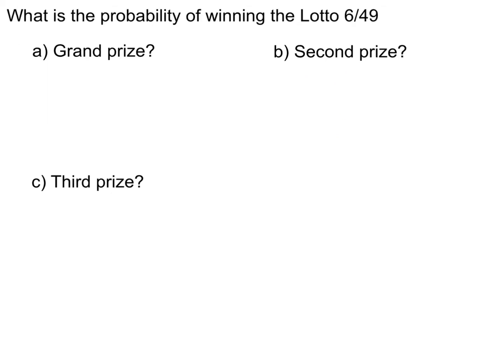Let's calculate the probability of winning the grand prize — that's matching all six of the drawn numbers correctly. Remember that the probability of any event is equal to the total number of outcomes for that event divided by the total number of all possible outcomes.